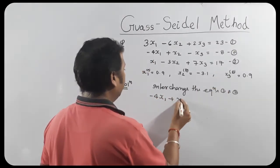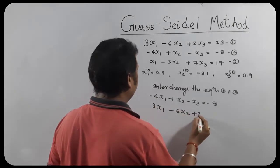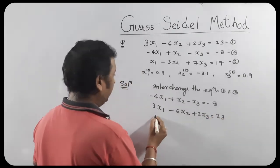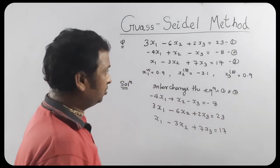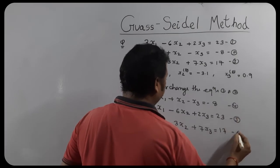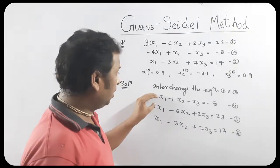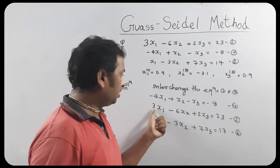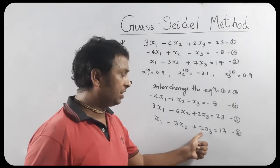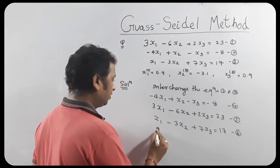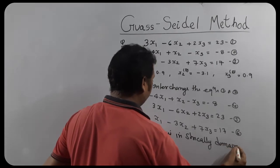After interchanging equations 1 and 2, the first equation becomes: minus 4x1 plus x2 minus x3 equals minus 8. Now friends, check — is this in diagonally dominant form? Yes. What is the coefficient of x1? 4 — because mod of minus 4 is 4. And 1 plus 1 equals 2, so 4 is greater than 2. Correct. For the second row: 6 is greater than 3 plus 2 equals 5. For the third: 7 is greater than 1 plus 3 equals 4. It is strictly diagonally dominant form.